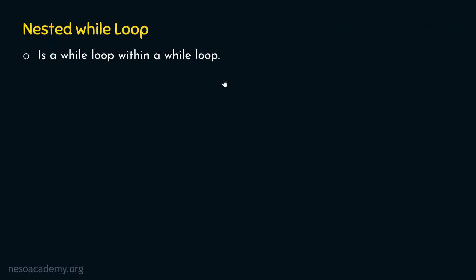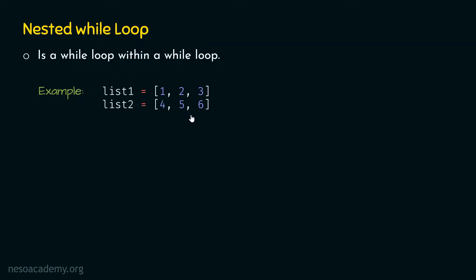In order to understand how nested while loop works, let's consider one simple example. Let's say we want to iterate over two lists — list one and list two. Each list contains three items and we want to print the items of those lists in a specific order. We can use nested while loop for this. Let's create list one and assign one, two, three to it, and list two and assign four, five, six to it.